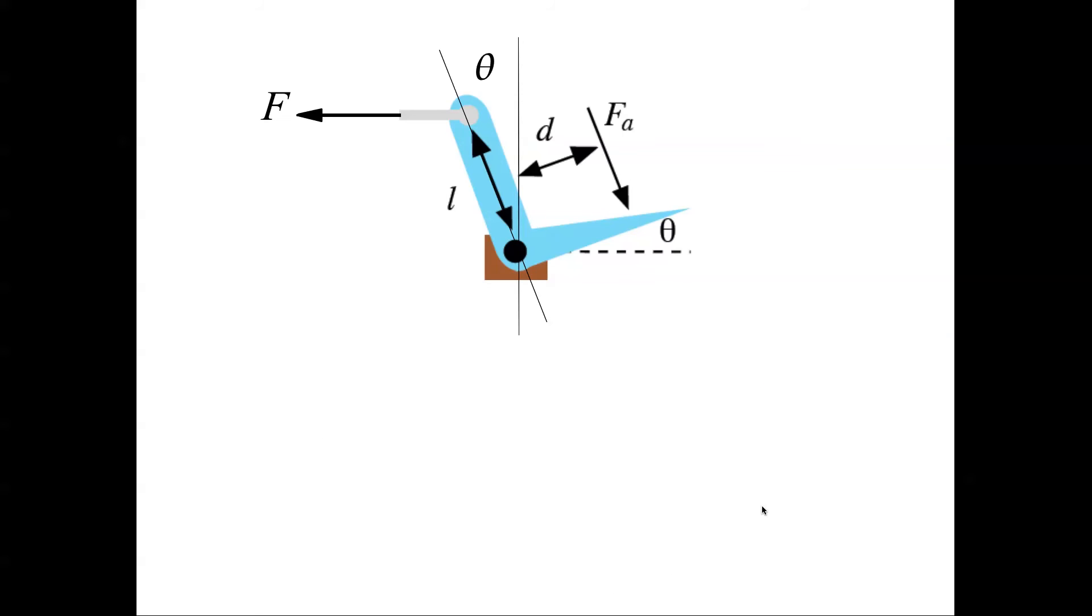Let's do the free body diagram of the spoiler. You have the force exerted by the cylinder on the spoiler. You have Fa which is the disturbance force, that is the air pressure force on the spoiler. These are the moment arms. D is the distance of Fa from the pivot. This here is the distance of force F from the pivot.